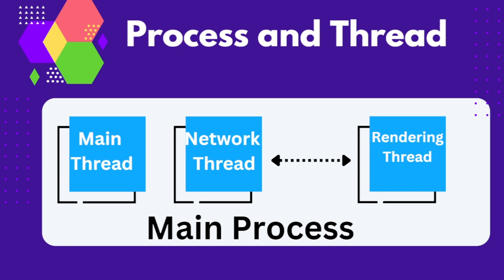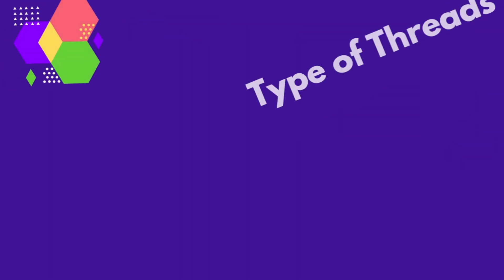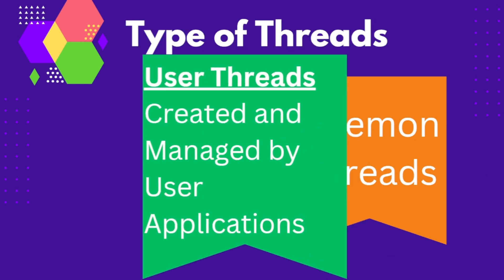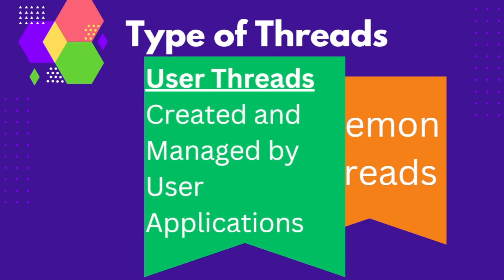Please let me know if this part is clear in the comment section and in case of any doubt we will try to resolve it. Moving ahead, there are mainly two types of threads that we will be dealing with in Java. The first one is user threads. These are the threads that are created and managed by user-level applications. They are often used to perform tasks specific to application functionality. Business logic is executed using these threads. They are flexible but mostly they rely on the underlying operating system support for thread management.